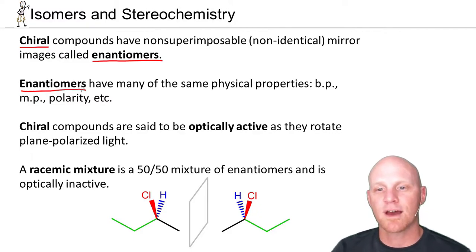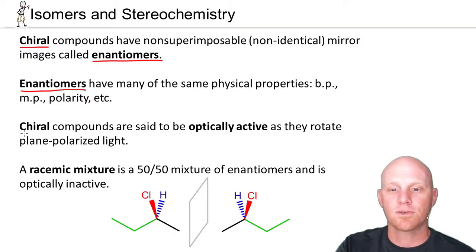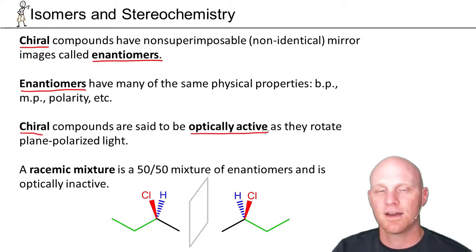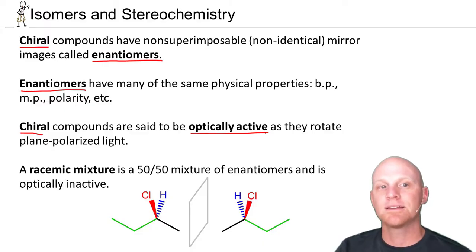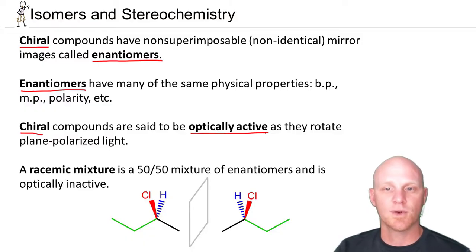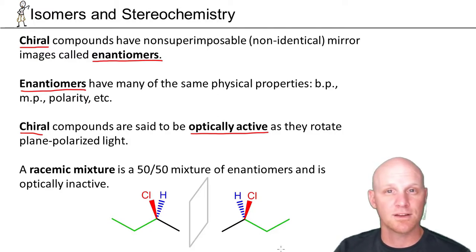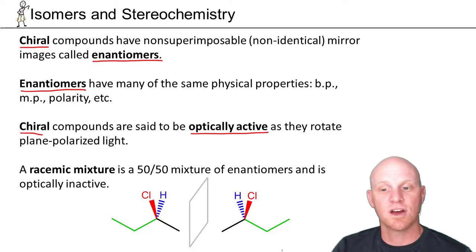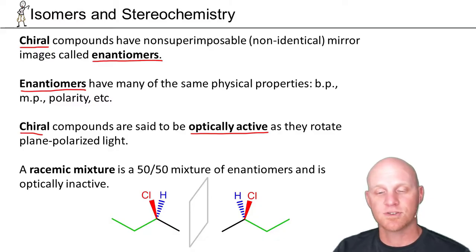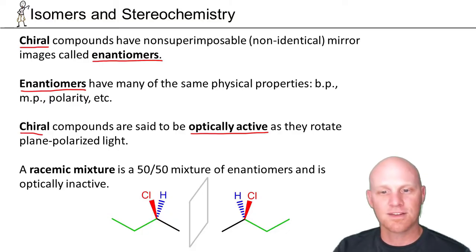We also say that chiral compounds are optically active — it turns out they rotate what's referred to as plane polarized light. Light has wave-like properties, and that wave can have an orientation associated with it. If we filter out every orientation except largely one, we call that plane polarized light. If you shine this plane polarized light through a solution of a chiral compound, that light gets rotated — the orientation changes. If the solution doesn't have chiral compounds, the light won't get rotated. Chiral compounds are optically active as they rotate plane polarized light.